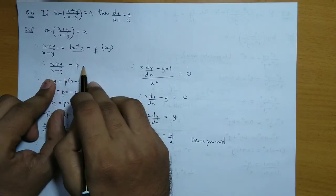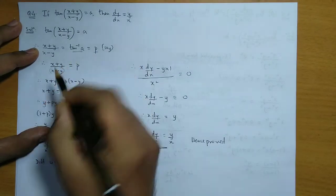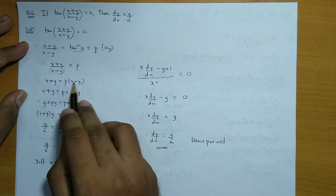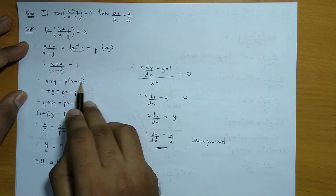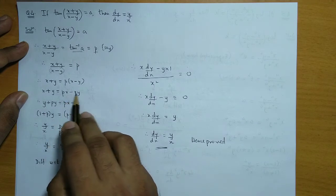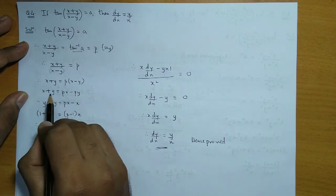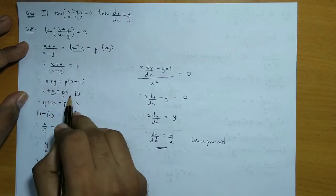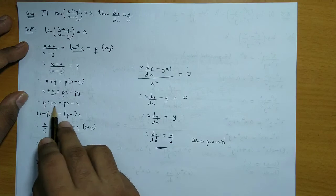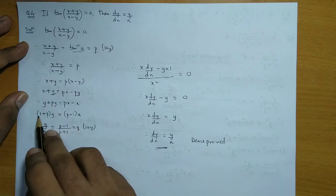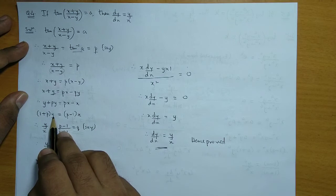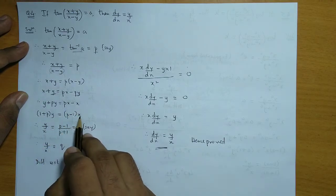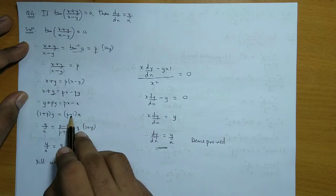Now we multiply the right hand side by (x-y). So we get x+y = p(x-y). Opening the bracket, we get px - py. Now collecting the y terms on one side and the x terms on the other side. Taking y common, we get (1+p)y. On the right hand side, taking x common, we get p minus 1 in the bracket.